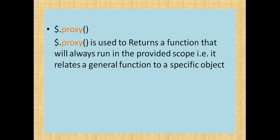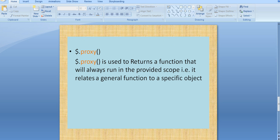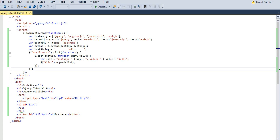The next utility method is proxy. Proxy is used to return a function that will always run in the provided scope — that is, it relates a general function to a specific object. Let's see how the proxy utility method can be used.